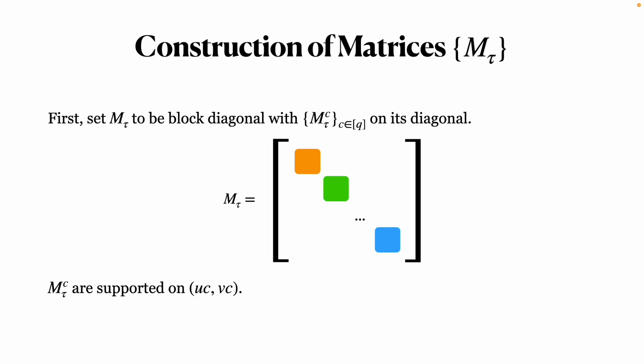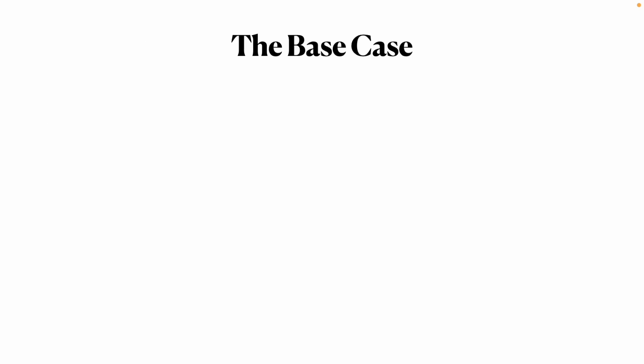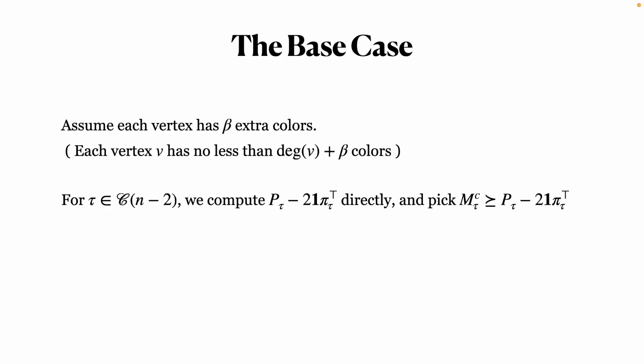We begin by setting Mτ as a block diagonal matrix with blocks of each color, and then we focus on one block Mτc. Assume each vertex has beta extra colors. We can establish the base case by direct computation, and we write Mτ in this form of beta.